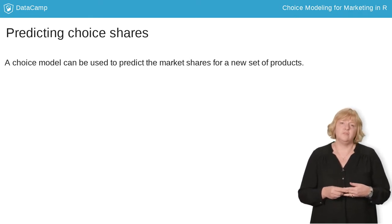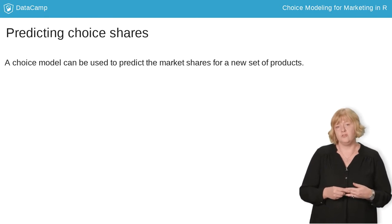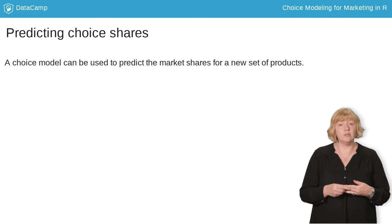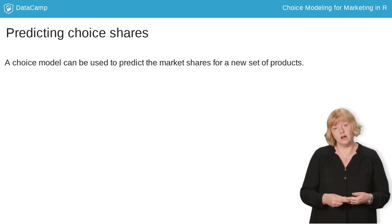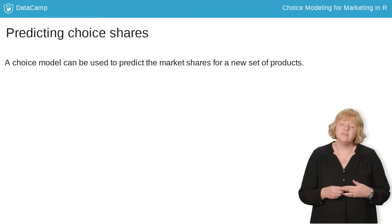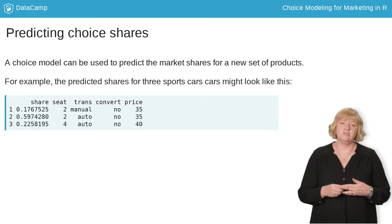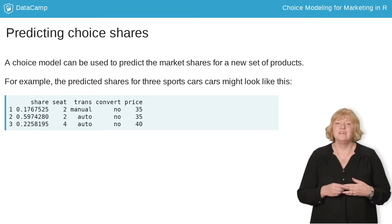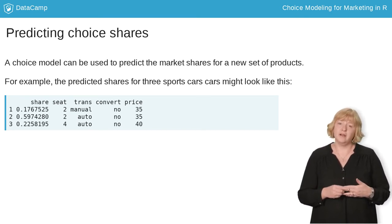For example, suppose you are designing a sports car and you know that you will have two major competitors. We can use our choice model to make a prediction about how likely people would be to choose our car versus the competitors. This output here shows the share predictions from our model, which are in the first column labeled share. These shares are computed from the model based on the product features which are described in the other columns.